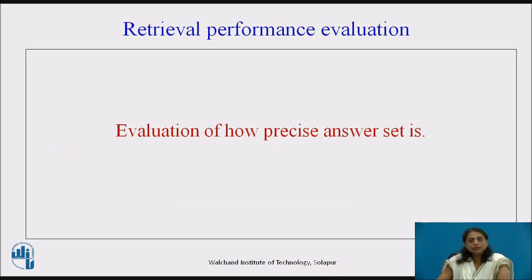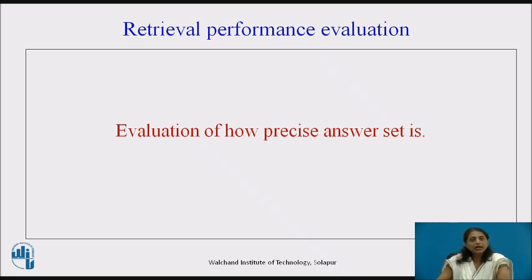Why is this necessary? In an information retrieval system, the user gives a vague description and documents are retrieved based on relevance. Unlike exact matching in data retrieval, here we get relevant documents as the answer set. So the evaluation is about how precise the answer set is, rather than exactly which documents are retrieved.